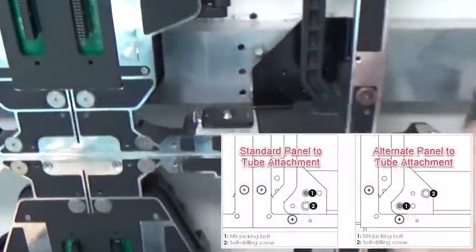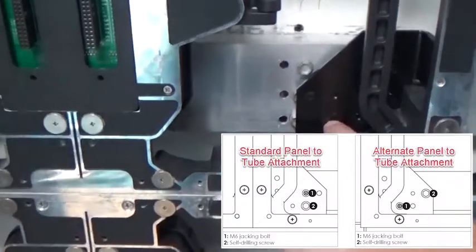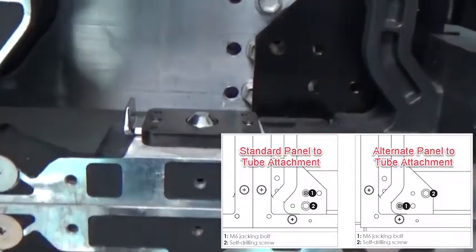If there is interference, drill the pilot holes using the alternate panel mounting locations.